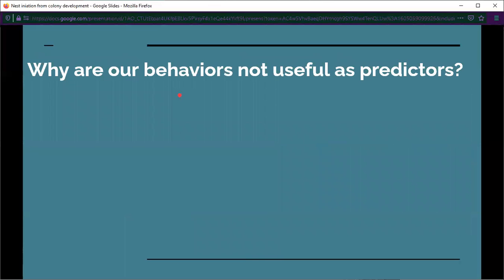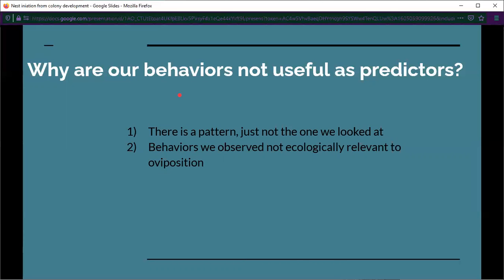Why are our behaviors not useful as predictors? There's two options here. The first is that there is a pattern, but we just haven't found the pattern yet. Before we were looking at their behavior at every single time before oviposition, but it could be something different. It could be the behavior in the first three days that we captured them, or the behaviors three days prior to oviposition could be indicative. Or it could just be simply that the behaviors we observed are not relevant to oviposition.